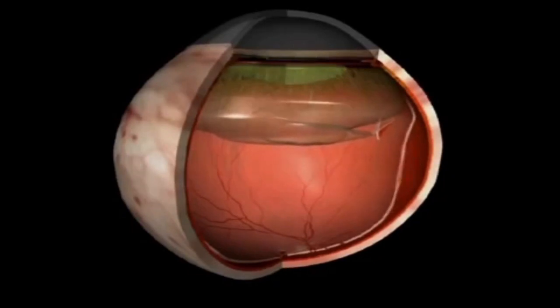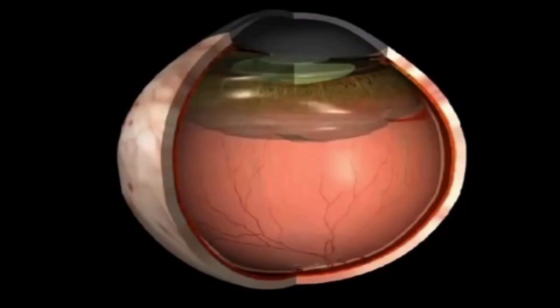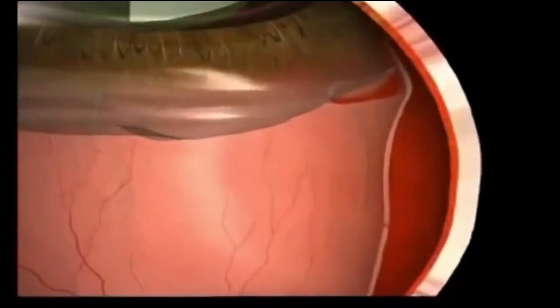Eventually, fluid gets behind the retina and the retina separates. This is called a PVD, the shrinking away of the vitreous jelly inside the eye.